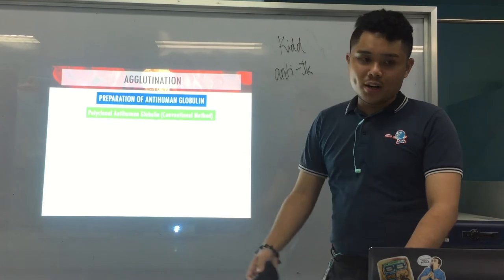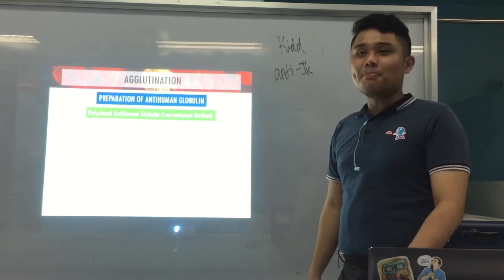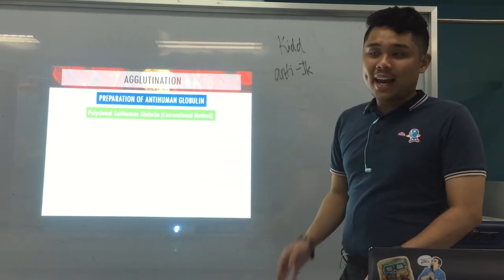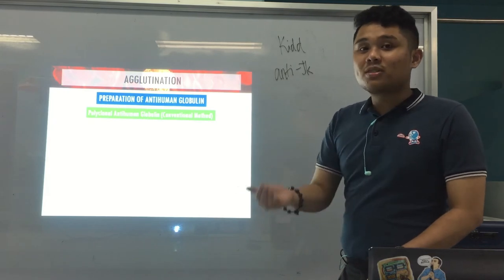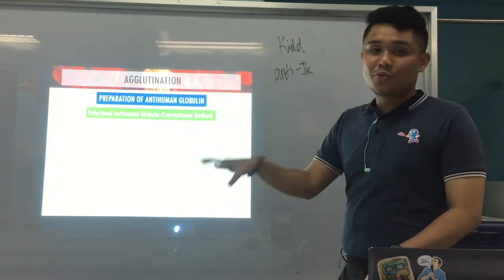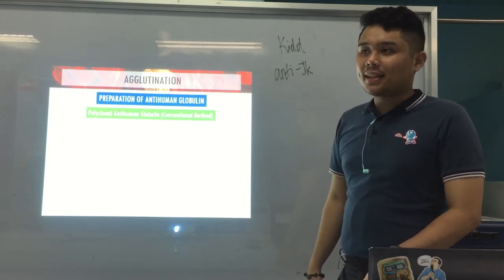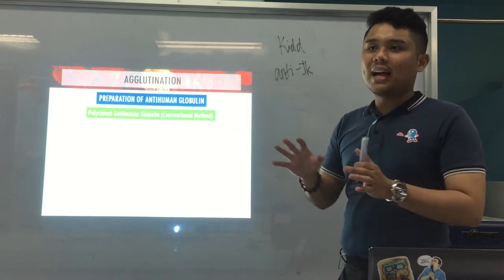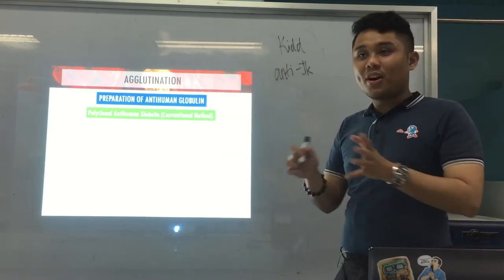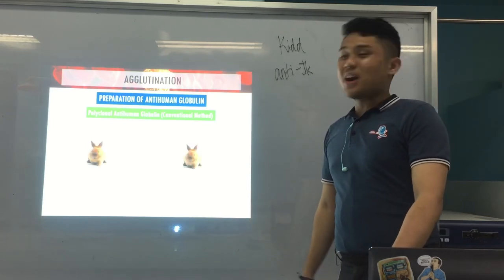Now, how is AHG prepared? We start with polyclonal anti-human globulin. Polyclonal means it comes from multiple clones of plasma cells. Since AHG is an antibody, it is produced by the plasma cells of animals. For this test, we usually use rabbits. If large volumes are needed, sheep or goats can be used.